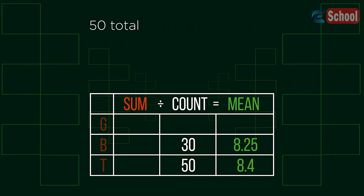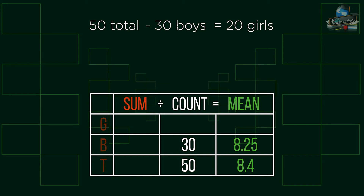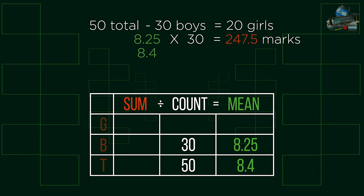As there are 50 people in total and 30 boys, there must be 20 girls. We now need to work out the sum marks for the total students and the boys. Because we divide to find the mean, the reverse should give us the sum, so we multiply the mean of each by their count.